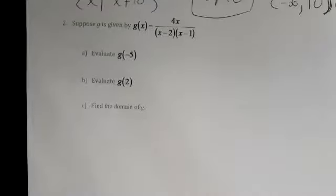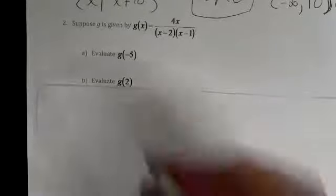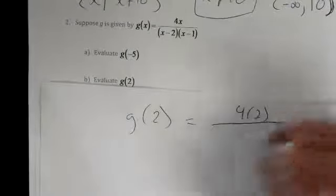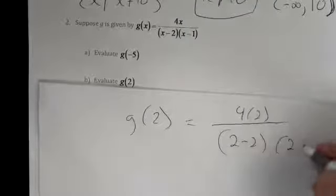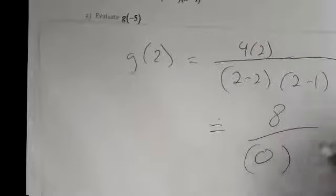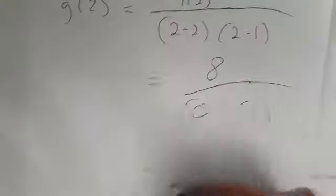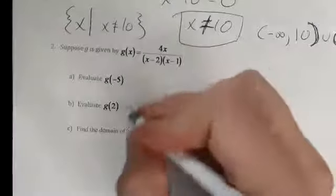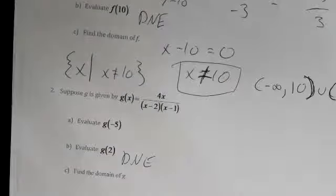The next thing is g(2). If I plug in g(2): 4(2) / ((2 − 2)(2 − 1)) = 8 / (0 × 1) = 8 / 0. Right away, that's 0 in the denominator. This is another undefined result — we can't do it. It's dividing by zero. We're unmaking the universe. So this does not exist. Any such result — undefined, error — is no good.